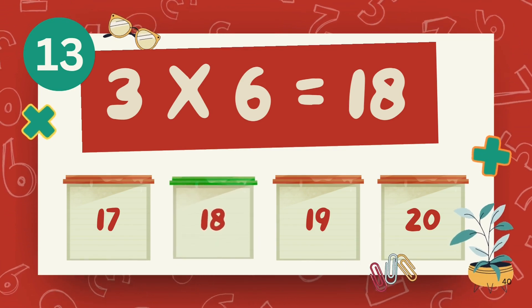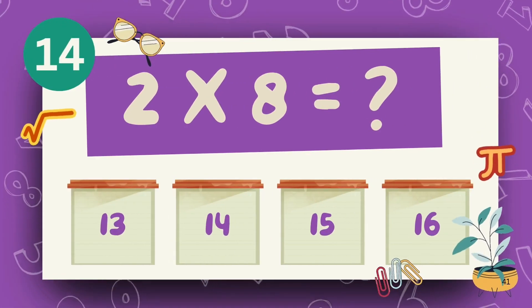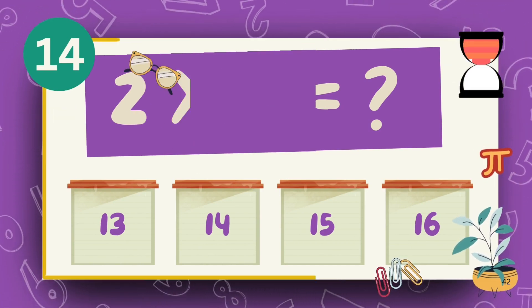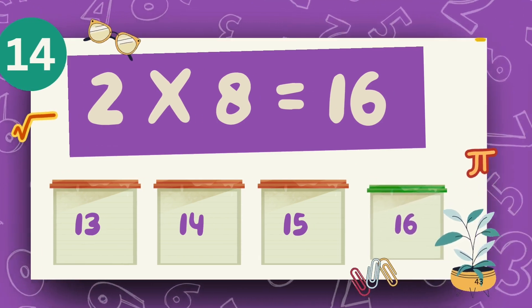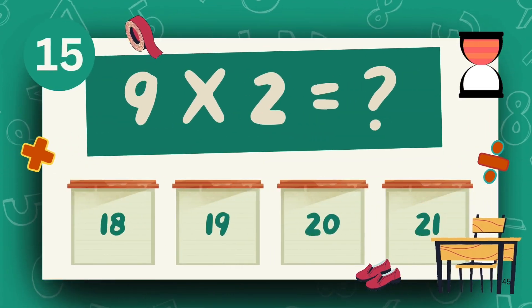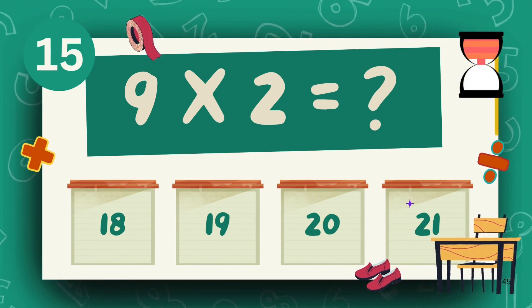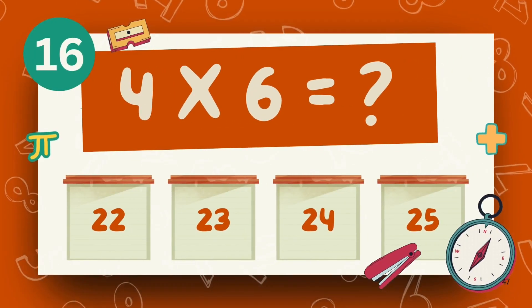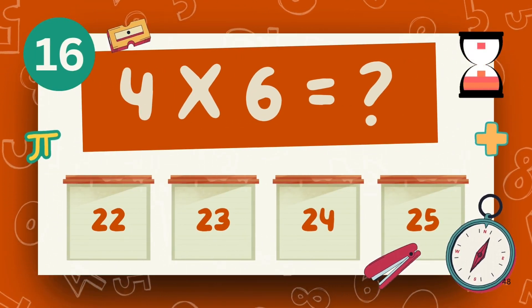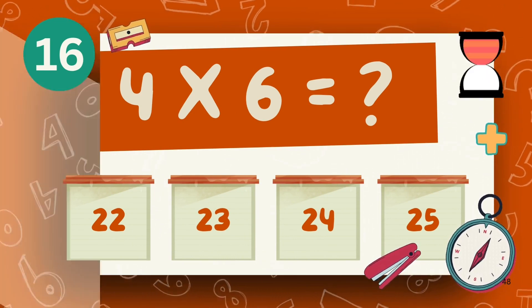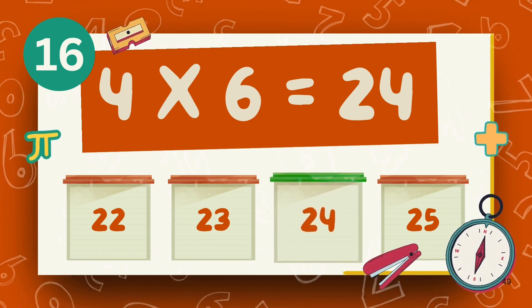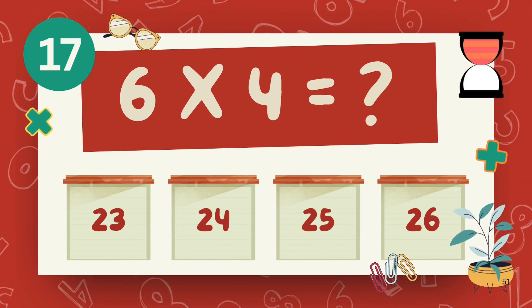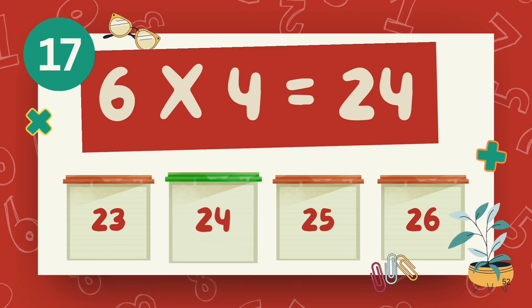The answer is 35. The answer is 16. What is 9 multiply 2? What is 6 multiply 4? The answer is 24. What is 6 multiply 4? The answer is 24.